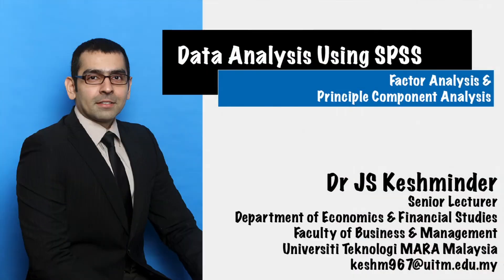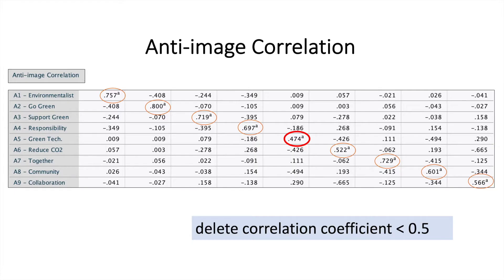In the second part of the video, we'll be looking into anti-image correlation. From the SPSS output on anti-image correlation, you have to check for all the values that are at the diagonal. And if any of the values is less than 0.5, you have to delete the value.